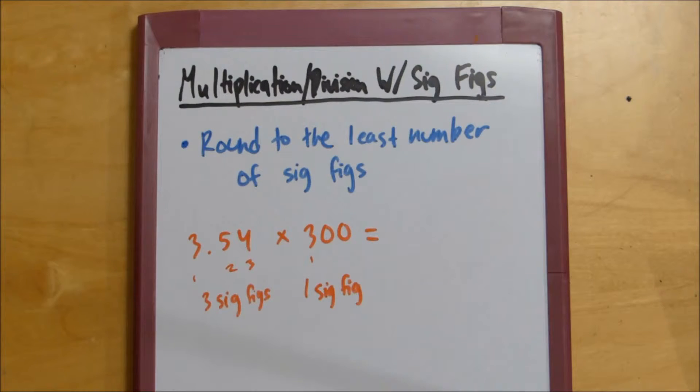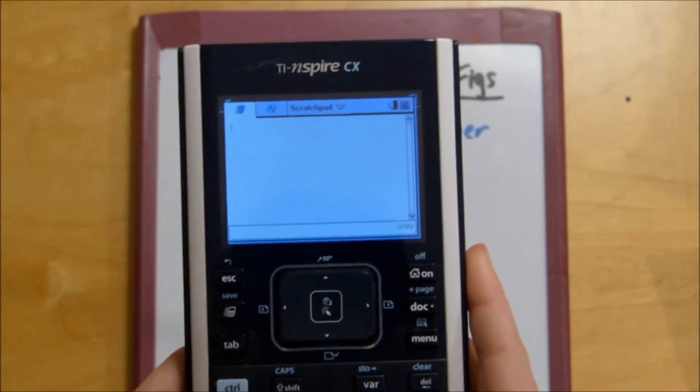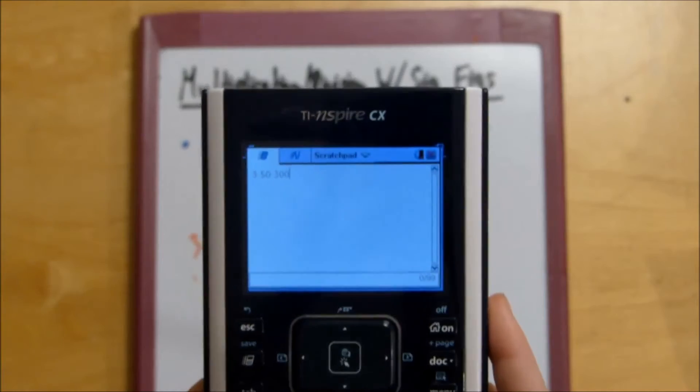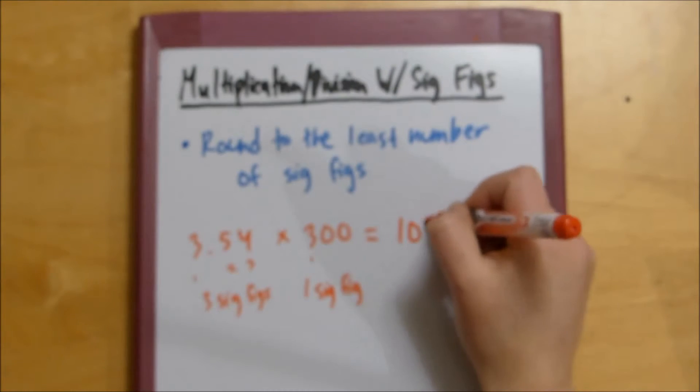I have my calculator right here because mental math is not my forte. 3.54 times 300.